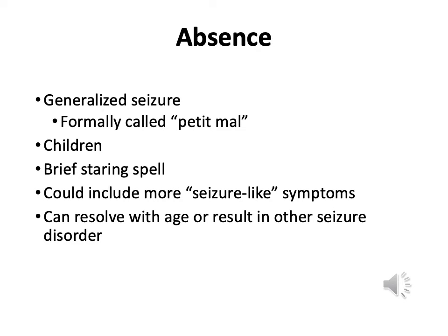Absence seizures are another generalized type of seizure. We used to call them petit mal. They happen primarily in children and can resolve as the child moves into adolescence, or could result in another seizure disorder. They're generally characterized by a brief staring spell — it could be in the middle of a sentence. For example, a baseball player hits the ball, runs around first base on their way to second, and halfway in between they stop and just stare out into the field. That's what these look like.